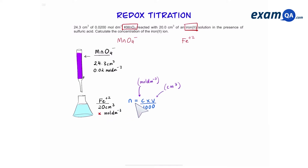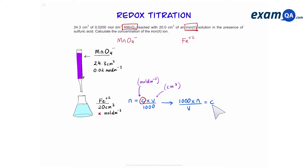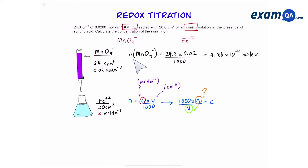We know that number of moles is equal to concentration times volume over 1000. We want to work out concentration, so we rearrange it to get: number of moles times 1000 over volume equals concentration. We already know the volume — it's 20 cm³ — however we don't know the moles of iron. So we can start by working out moles of manganate, using the formula number of moles equals concentration times volume over 1000. The reason we use 1000 is because the volume is in cm³. This gives us 4.86 × 10⁻⁴.